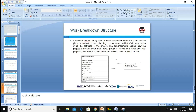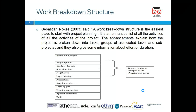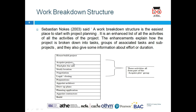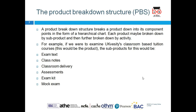According to Seppelstein, a Work Breakdown Structure (WBS) is the easiest place to start with project planning. It is an enhanced list of all the activities of the project, explaining how the project is broken down into tasks and groups of associated activities. It also gives information about the effort and duration. For example, if you want to build a house, the activities include: acquire land, find a plot, study the location, negotiation, legal and closing, preparation, appoint architect, draft the plan, planning application, appoint contractor, and build the house.